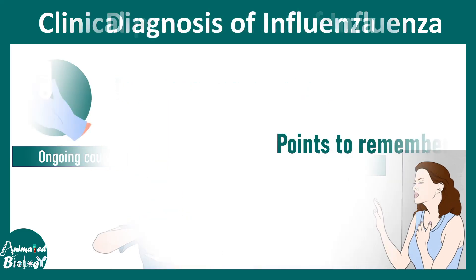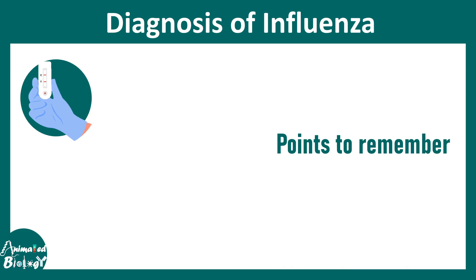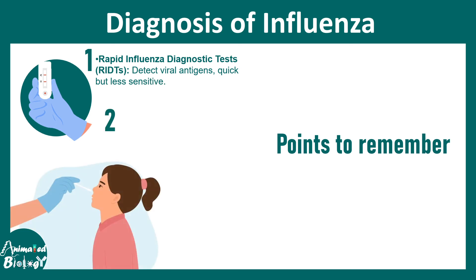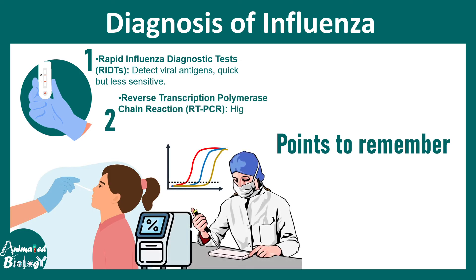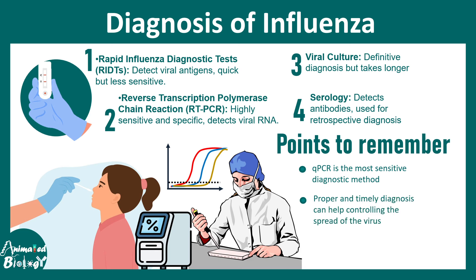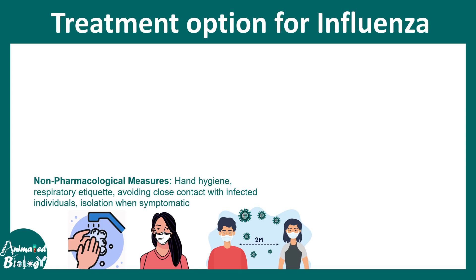Diagnosis of influenza can be done using a rapid influenza diagnostic test, which detects viral antigen — it is quick but not very sensitive. The best method is quantitative PCR (qPCR) from a nasal swab, which looks for virus-specific RNA and is the most sensitive diagnostic method. Viral culture or serology-based testing may be useful for retrospective diagnosis or population studies. Proper and timely diagnosis can help control the spread of the virus in a population.